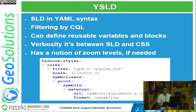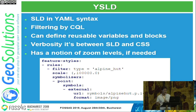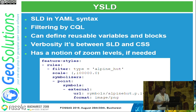Then we have YSLD. The idea is that YAML can map more or less every XML concept, so they did an equivalent of SLD in YAML. The result is more compact — verbosity is between SLD and CSS — and it has a notion of zoom levels if needed, or you can use scale denominators. The same style expressed in YSLD is more compact and more readable, though personally I hate YAML.